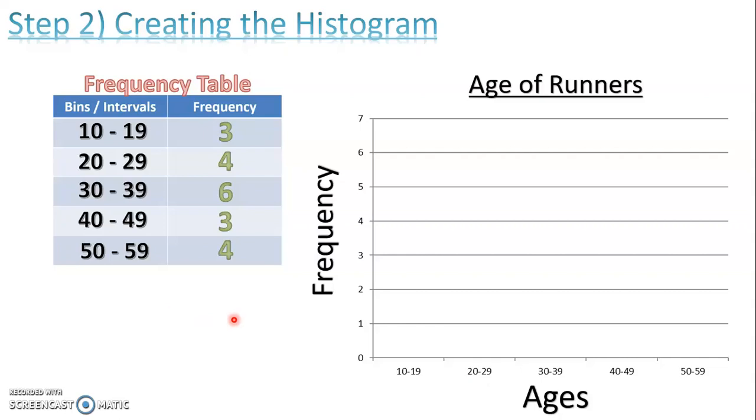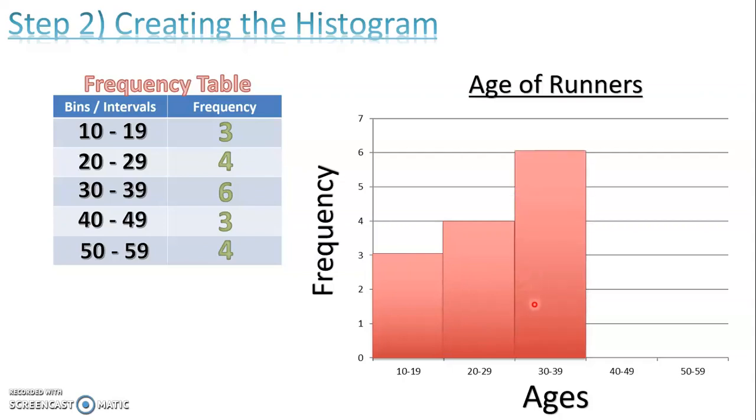So the number of runners between 10 and 19 is 3. So I'm going to shade up until 3. Over here, between 20 and 29, we have 4. So we're going to shade up to 4. Notice I do not leave a space between the bars, right? They're connected. We put them right next to each other because this is continuous data. Because as soon as I finish 19, we move on to 20.